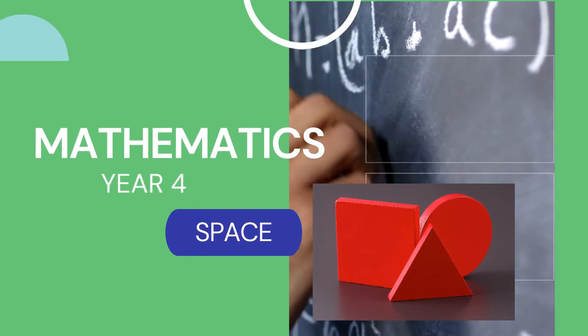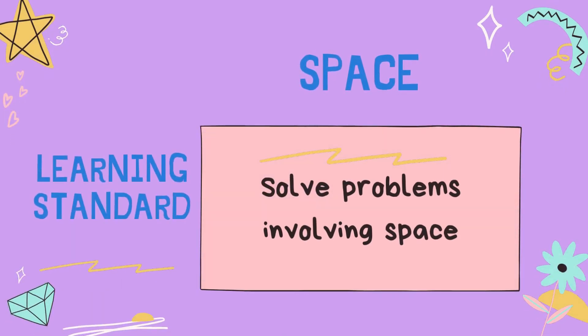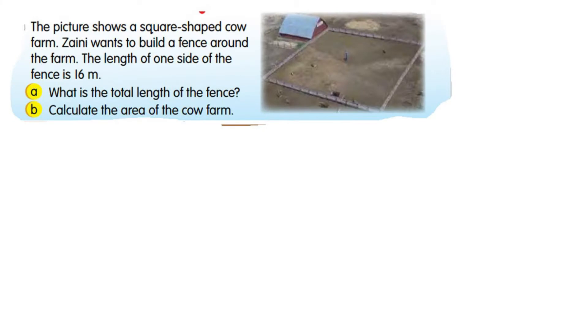Hi children, welcome to class today. Today we will learn to solve problems involving space. Look at example one. The picture shows a square-shaped cow farm. Zaini wants to build a fence around the farm.